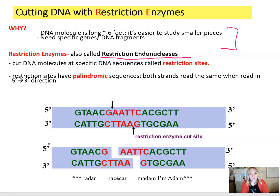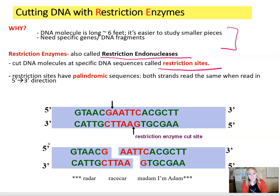DNA is going to be cut at very precise locations, and we call these locations restriction sites. That's where the specific restriction enzymes are going to cleave the DNA. Those sequences are going to be unique in that they are going to be read in the same way. So if you go from the 5' to 3' direction, you're going to see the pattern of the nucleotides — the bases are going to be exactly the same. For example, we have a sequence GAA-TTC, and if we read the other strand from 5' to 3' direction, it's going to be exactly the same: GAA-TTC. Because of that, we call these restriction sites palindromic sites.